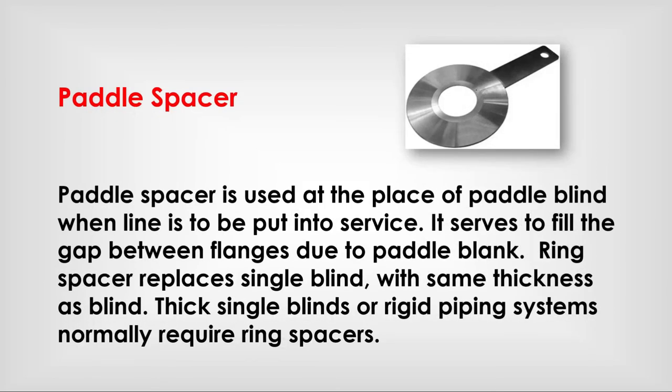Paddle Spacer: A paddle spacer is used in place of the paddle blind when the line is to be put into service. It serves to fill the gap between flanges created by the paddle blind. A ring spacer replaces a single blind with the same thickness as the blind. Thick single blinds or rigid piping systems normally require ring spacers.